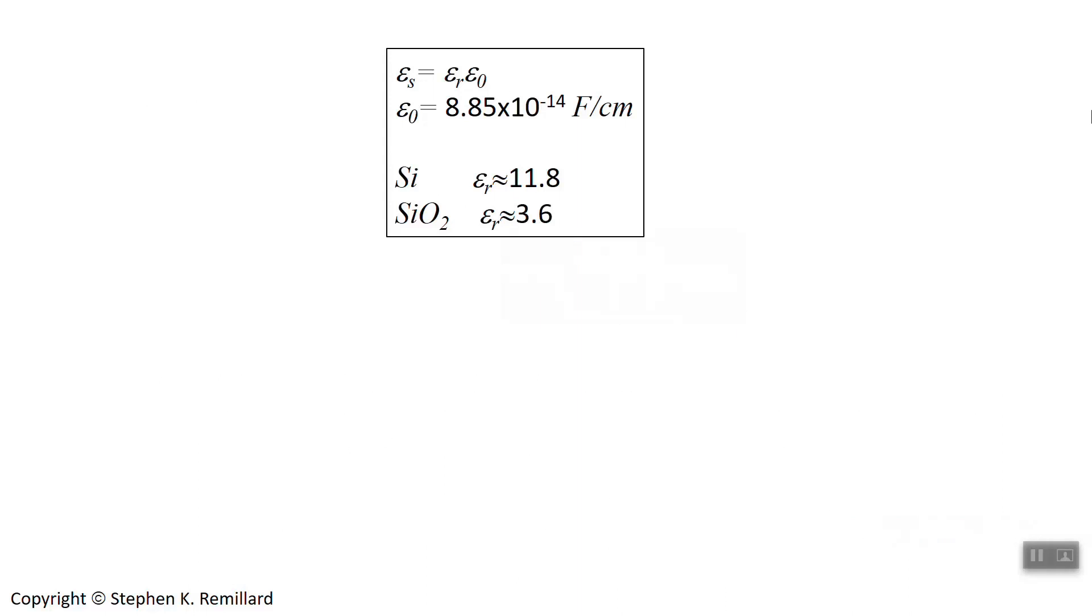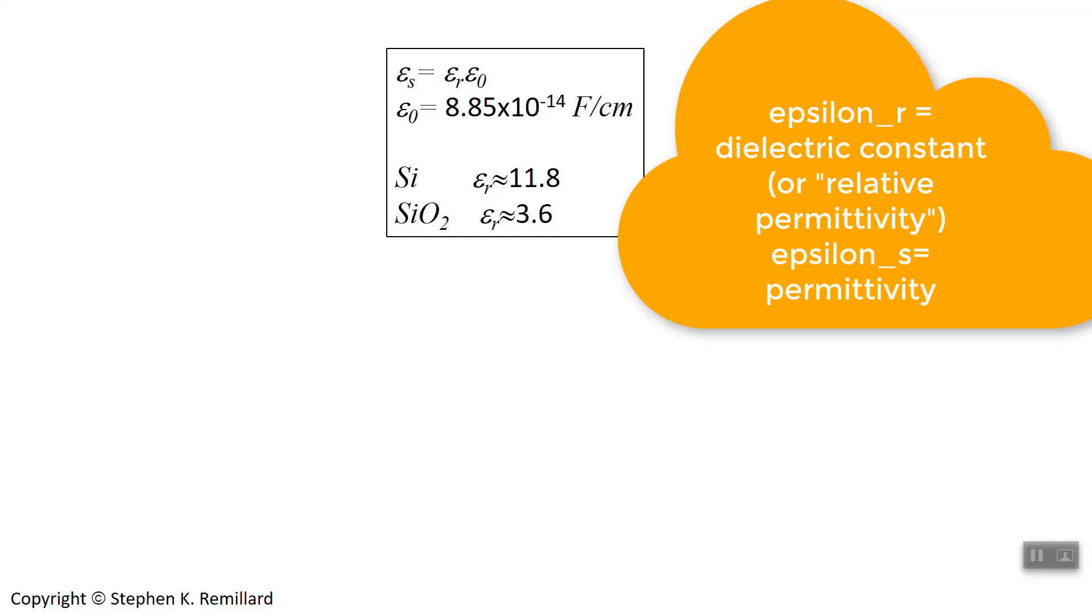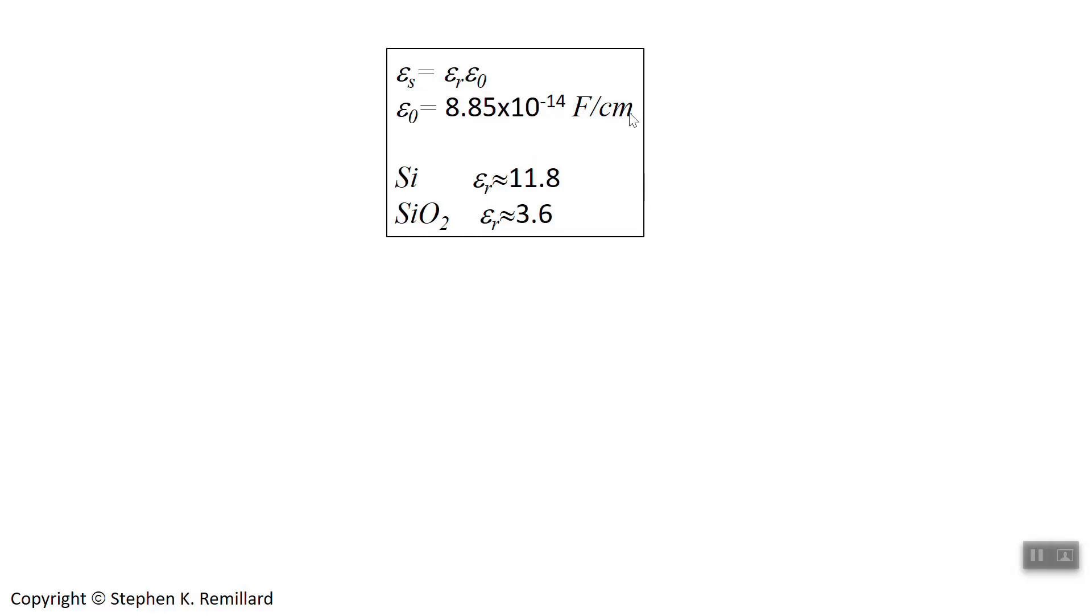Epsilon sub S is a product of permittivity of free space, epsilon naught, and the dielectric constant, epsilon sub R. So epsilon sub R is a number that ranges from 1 to 20, typically, for most materials. It can be a lot larger for very dielectric materials. Epsilon sub S is the permittivity of the material. Epsilon naught is the permittivity of free space. And epsilon sub R is the relative dielectric constant, or sometimes called the relative permittivity. We'll use farads per centimeter as our units on epsilon naught. You're going to use these numbers a lot.